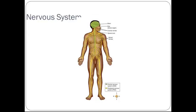Here's a picture of the nervous system, our central nervous system, which is just the brain and the spinal cord. And then the peripheral nervous system is all other nerves.